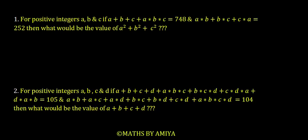Question number one: for positive integers A, B, C, we have an expression with value 748 and another expression with value 252, and we need to find A² + B² + C². The second question: for positive integers A, B, C, and D, we have an expression with value 105, another expression with value 104, and we need to find A + B + C + D.